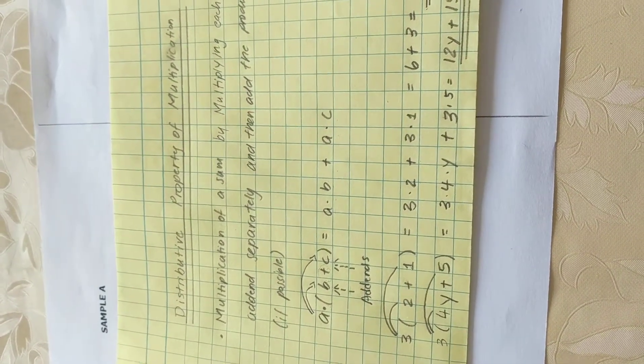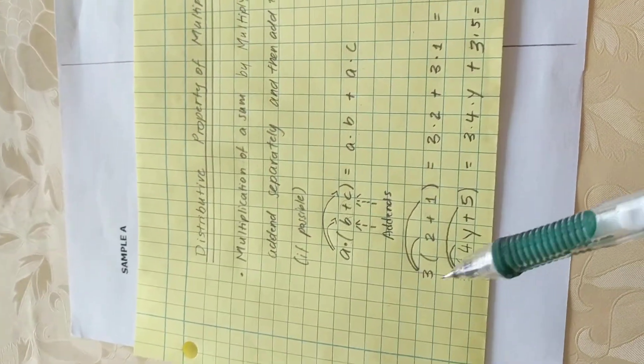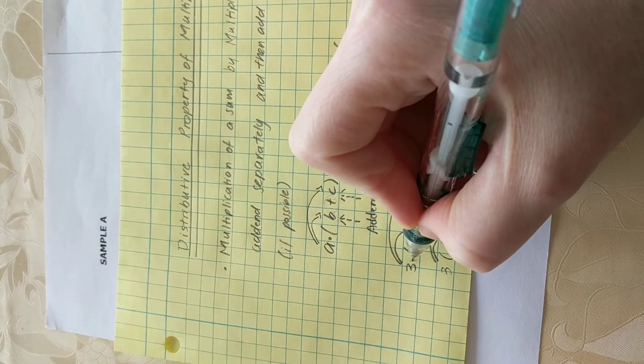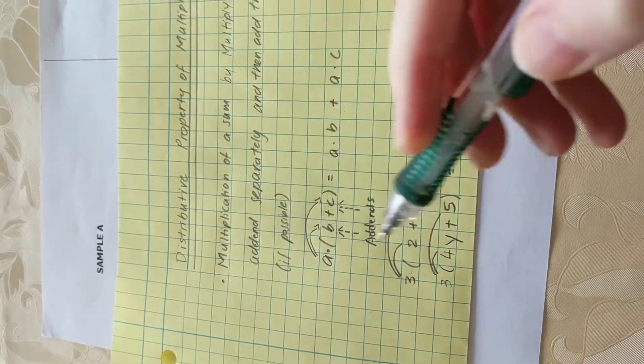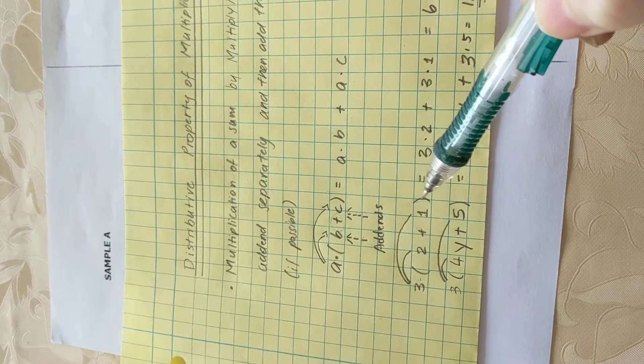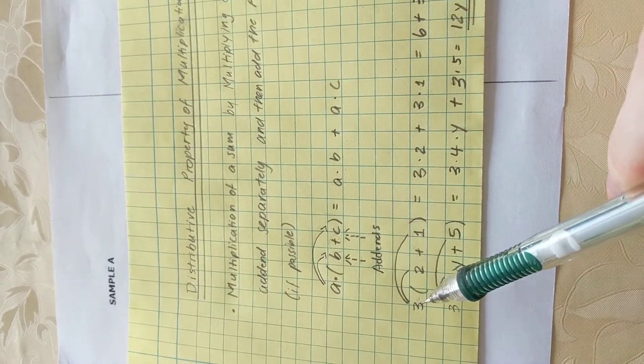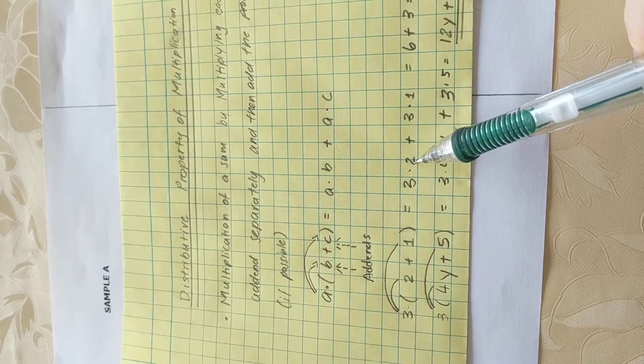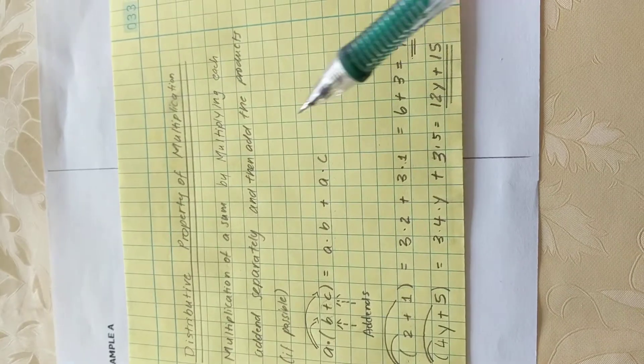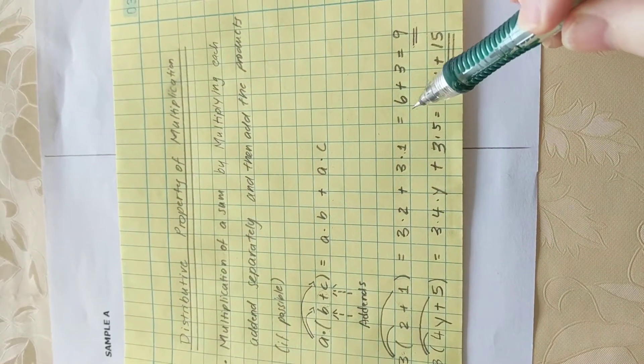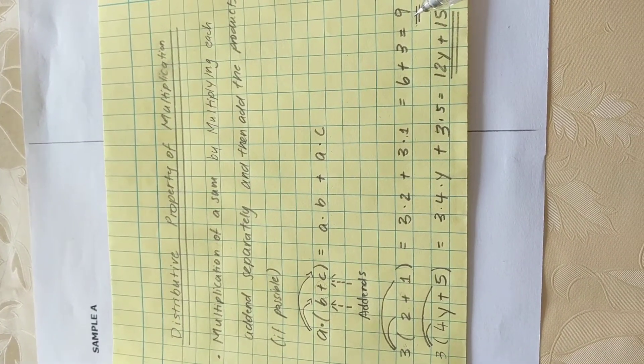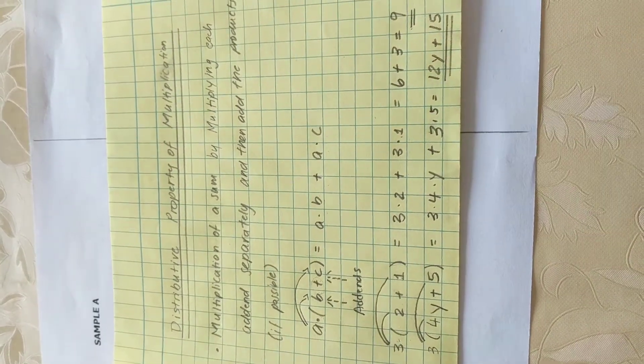This is very abstract. So in terms of using a specific or a concrete example, let's use three times open parenthesis two plus one close parenthesis. Using the distributive property of multiplication, we are saying three times two plus three times one, which now makes six from three times two plus three times one is equal to three, and six plus three is equal to nine. Therefore, this entire expression is equal to nine.